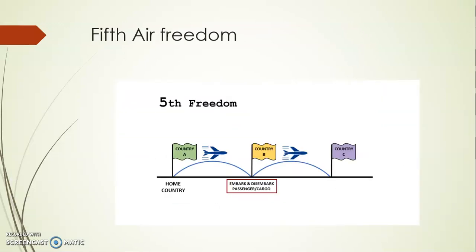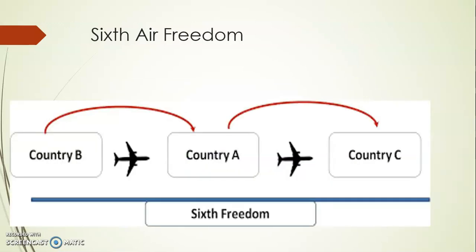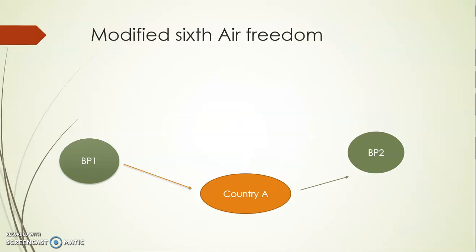The Sixth Air Freedom is an extension of the Fifth. Here the carrier starts from a foreign country, comes to the home country, picks up passengers, and then goes to another country. For example, an Air India flight could start from France, come to India, pick up passengers, and then fly to Thailand. So the home country comes in between two other countries.